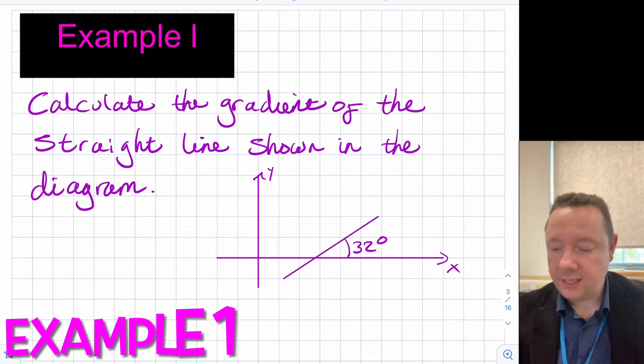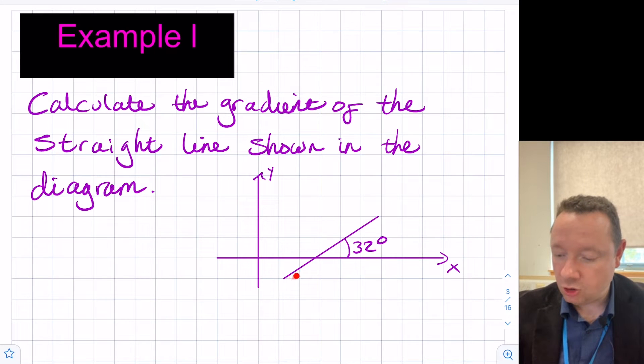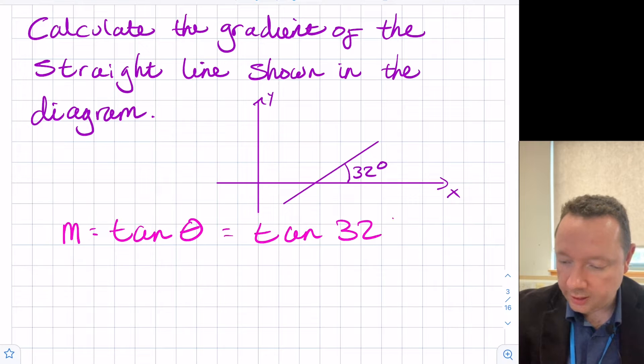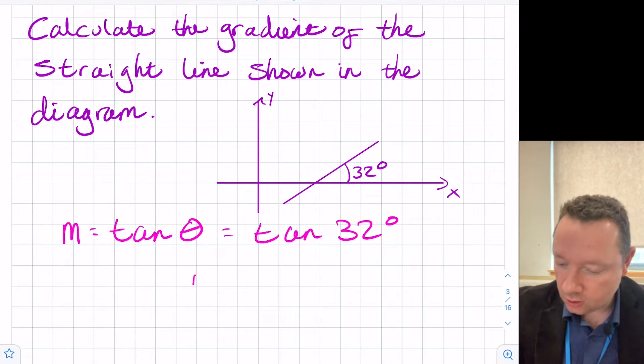Example one says calculate the gradient of the straight line shown in this diagram. So we've got a simple diagram, a straight line, and we've got an angle of 32 degrees and we have to calculate the gradient. So we should be able to write down that the gradient equals tan of the angle. So that's equal to tan 32°. So we'll need to get a calculator and work that out. The tan of 32° is 0.625 to 3 decimal places. So our gradient is 0.625 to 3 decimal places.